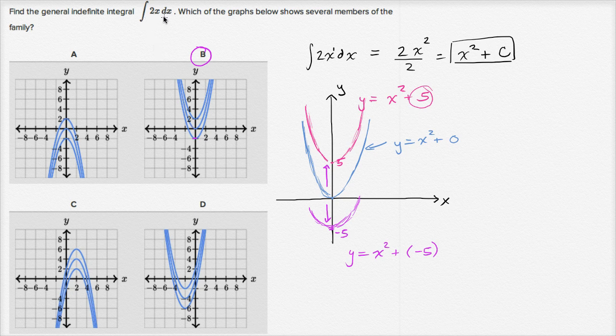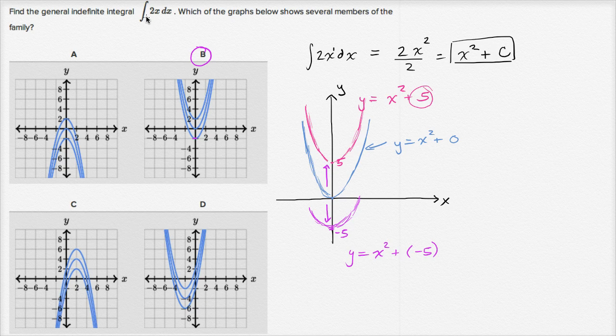Another way to think about it, the antiderivative of this, or the integral, the indefinite integral of two x dx, is going to be x squared plus c, which would be represented by things that look like, so essentially things, essentially y equals x squared, shifted up or down. So I could keep drawing over and over again.